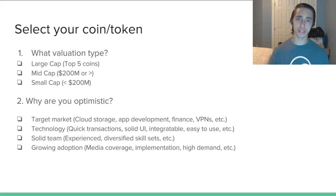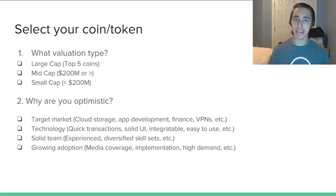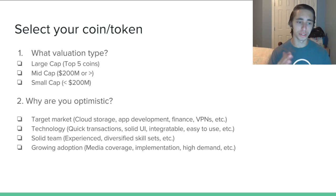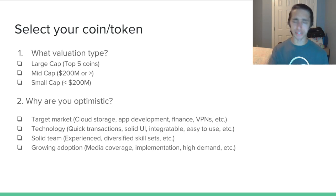The first category is target market — what is the coin aiming to be? Examples include cloud storage, app development, finance, and VPNs. Sia Coin, for instance, has a decentralized blockchain network where you can store information on hard drives across the globe and pay people through Sia Coin. Second is technology — is the tech actually out there, easily used, downloadable, accessible, and ready for wide scale? Third is a solid dev team. You do not want to invest in a coin that claims to build great technology but only has two or three developers.